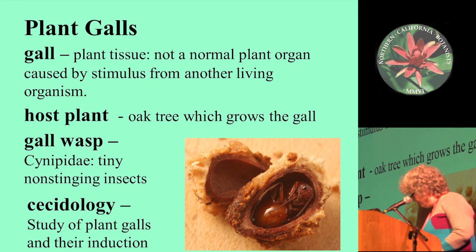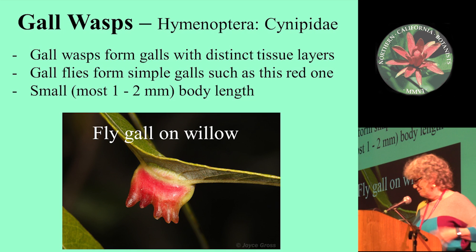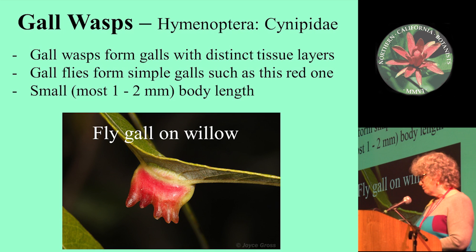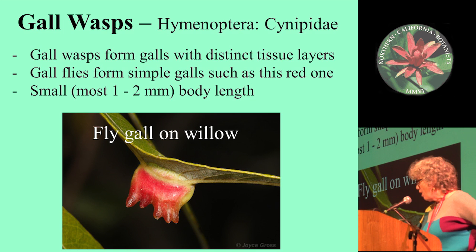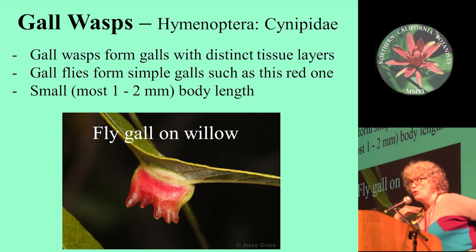Gall wasps are in the order Hymenoptera, family Cynipidae. They form galls with separate, distinctive tissue layers, always with a central chamber. There are such things as gall flies — a whole family which, like the Cynipidae, are found only in galls. But this talk is about gall wasps, not gall flies.